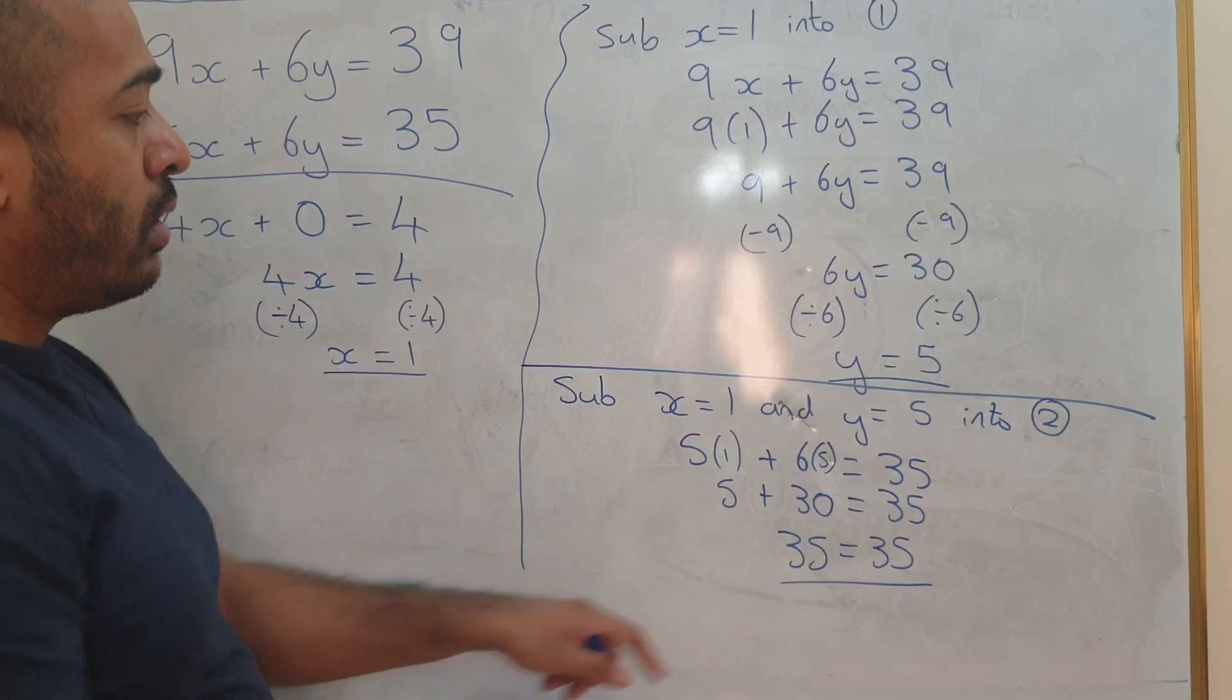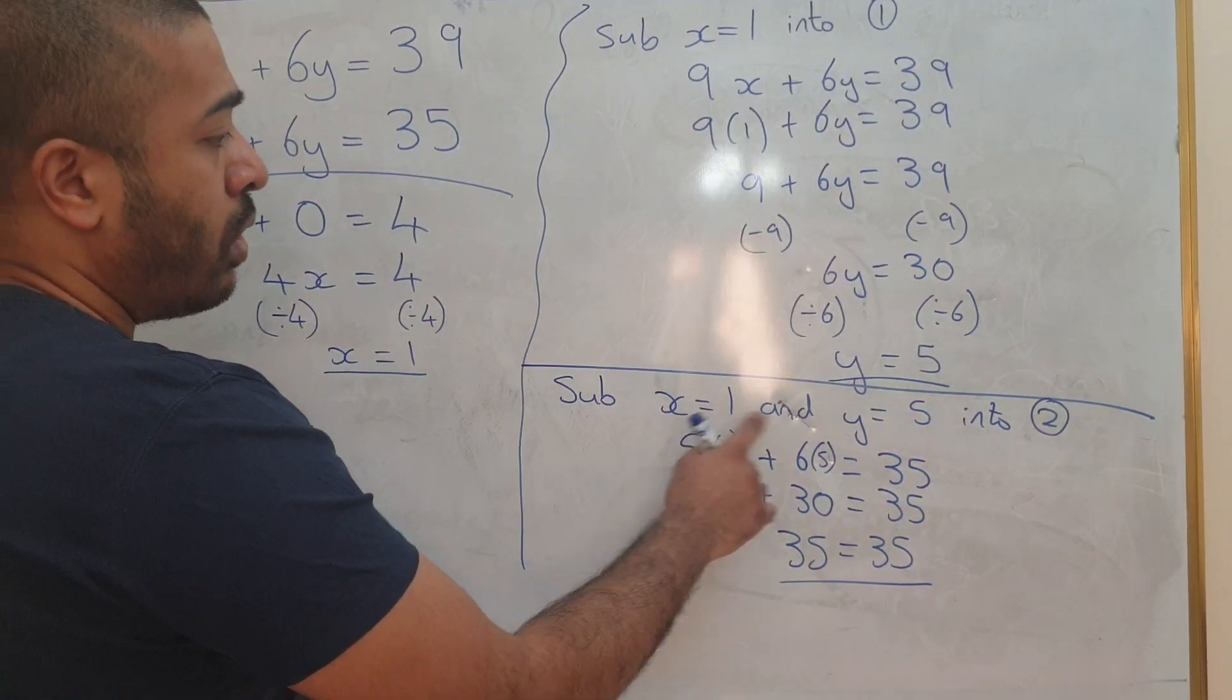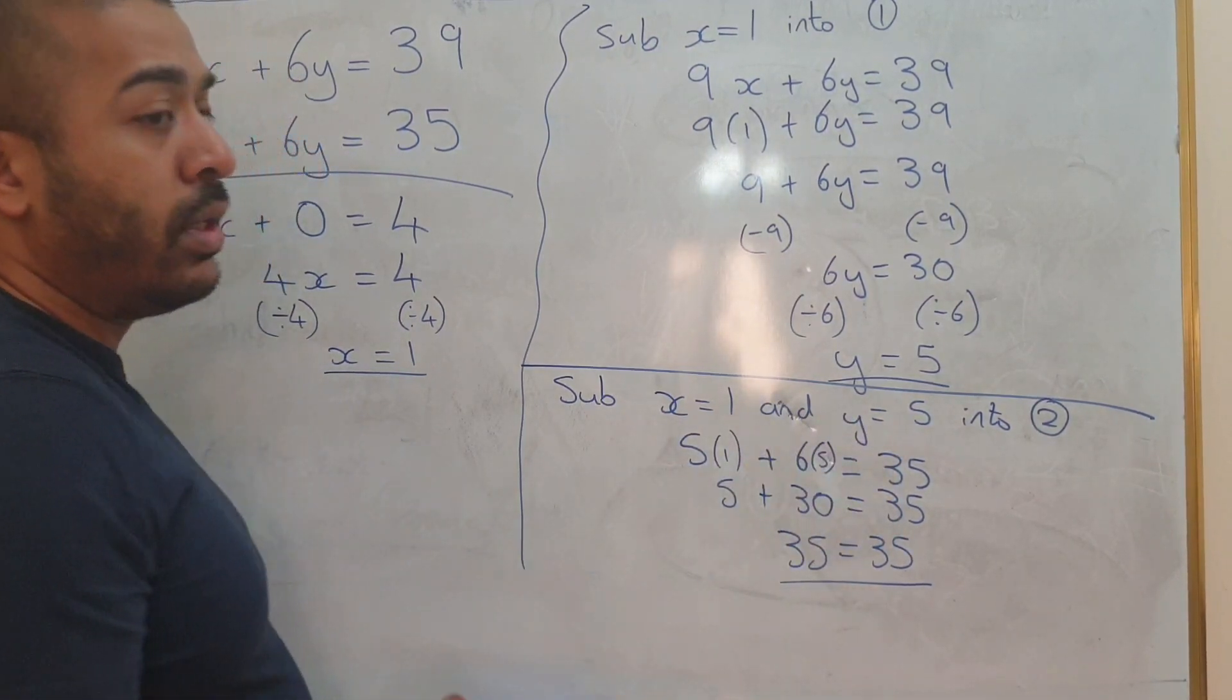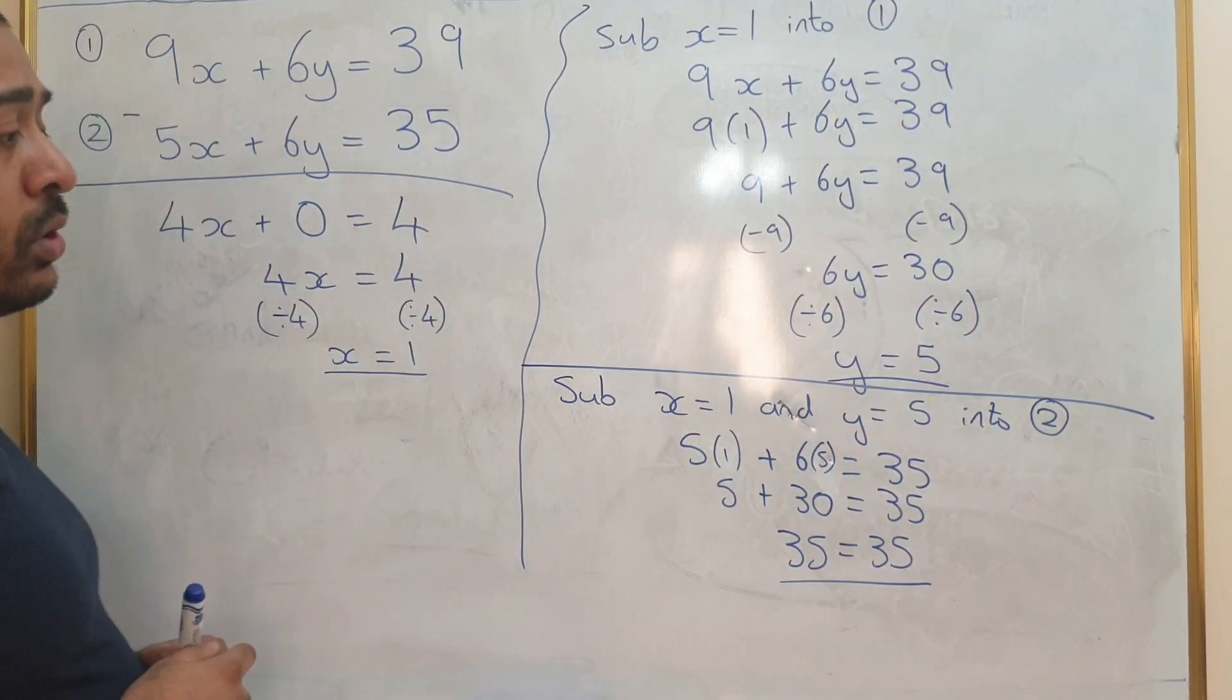As you can see, it's balanced. Therefore, x equals 1 and y equals 5 are the correct solutions for these two simultaneous equations. Thank you.